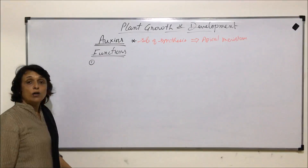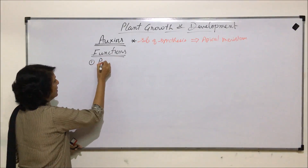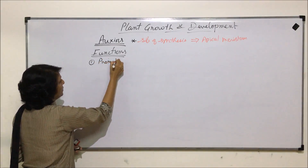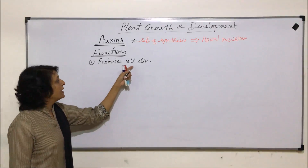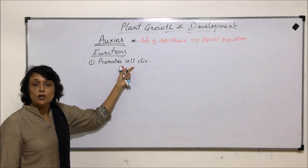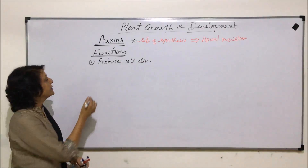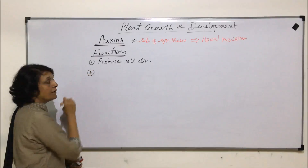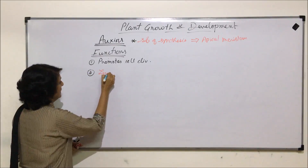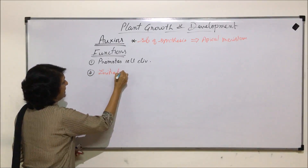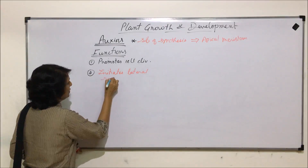The first function is that auxins promote cell division. We will see how this property can be used for tissue culture and other techniques. The second function is that auxins initiate lateral root formation.